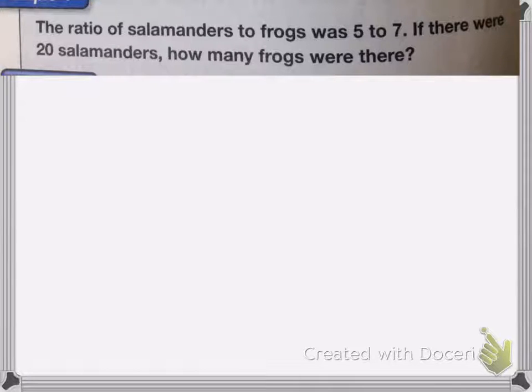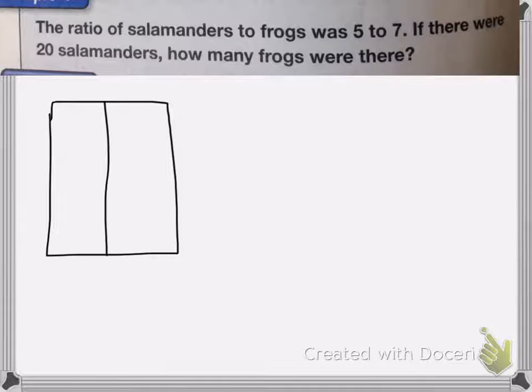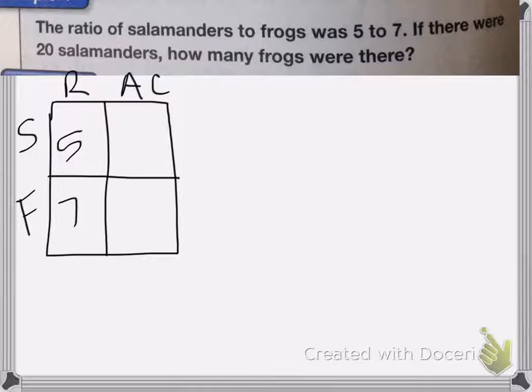When we're dealing with ratios, the easiest way to do it is to draw my ratio box. In this case, I have the ratio of salamanders to frogs, which was five to seven. Remember, we have ratio in the first box, actual count in the second box.